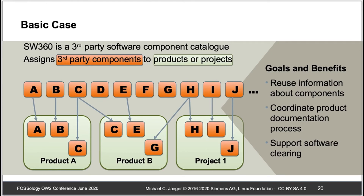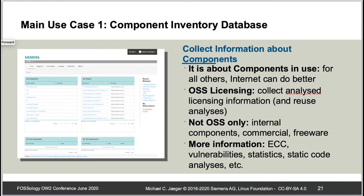When you have a catalog of components, the natural next step is bill of materials management. You can map component usage to your products and projects. This enables many use cases: not only creating license documentation for a product, but also tracking vulnerabilities, caring for trade compliance, and finding commercial software use inside your products. SW360 focuses on the components inside your organization and maintains bill of materials for your projects and products, enabling all the use cases needed when you distribute your products.